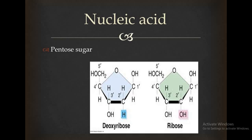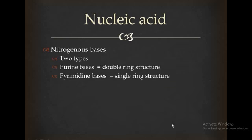The pentose sugar exists in two forms: one is the deoxyribose form and one is the ribose form. In deoxyribose, the hydroxyl group has the oxygen removed. We call it deoxyribose sugar. When the hydroxyl group retains the oxygen, we call it ribose sugar.